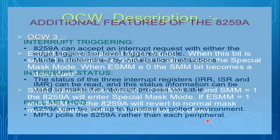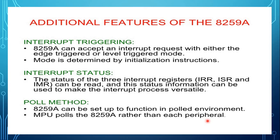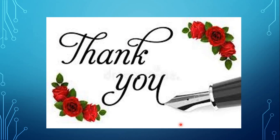The additional features of the 8259: first, interrupt triggering — the 8259 can accept an interrupt request with either edge-triggered mode or level-triggered mode. Second, interrupt status — the status of the IRR, ISR, and IMR registers can be read. Third, poll method — the 8259 can be set up to function in a polled environment, where the microprocessor polls the 8259 rather than each peripheral. These are the details of the 8259 PIC Programmable Interrupt Controller.